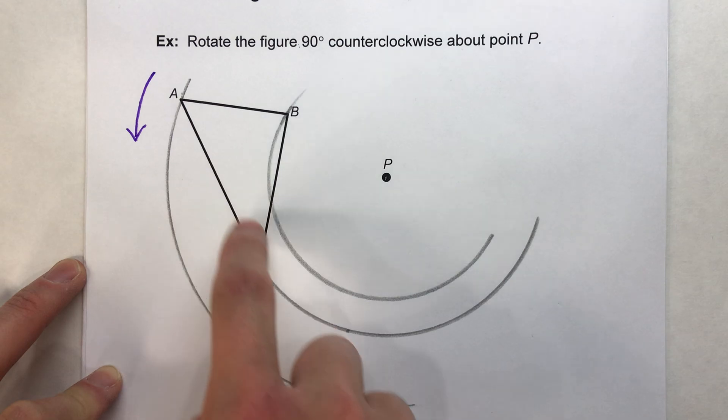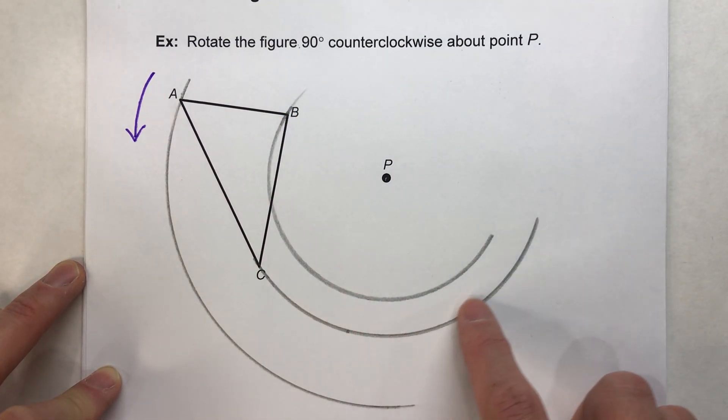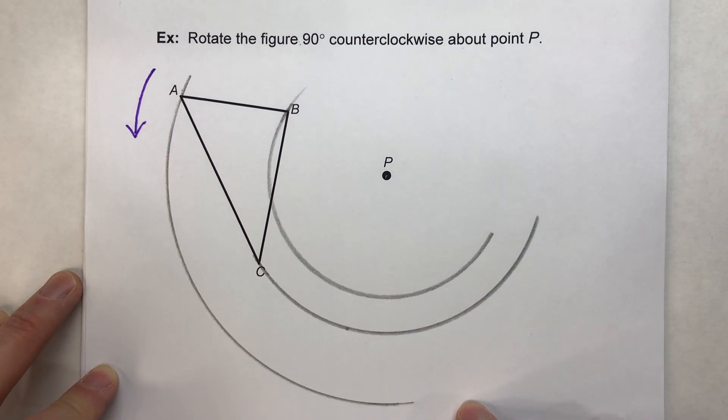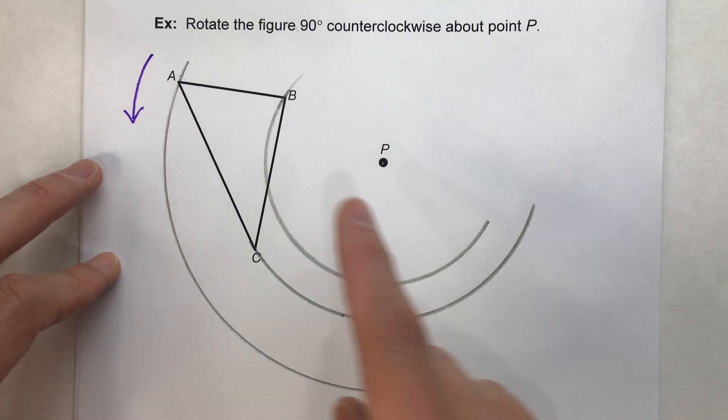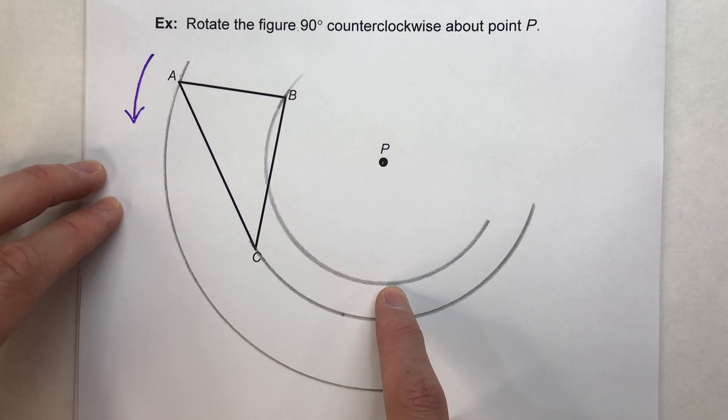So each of these corners of my triangle are going to be following their little paths here. Now, the question is, even though B is going to follow this path, when does it stop?